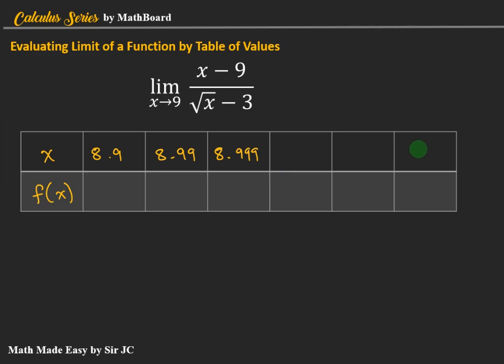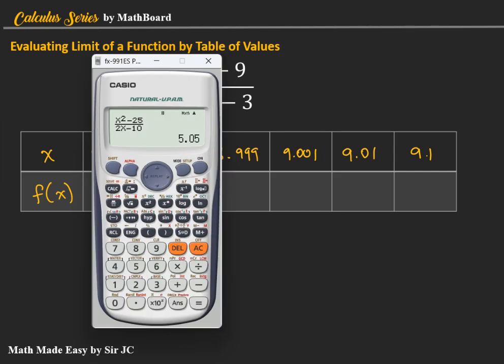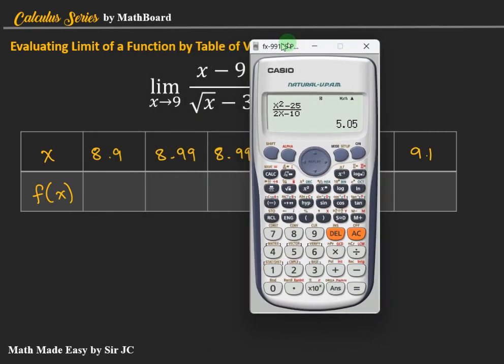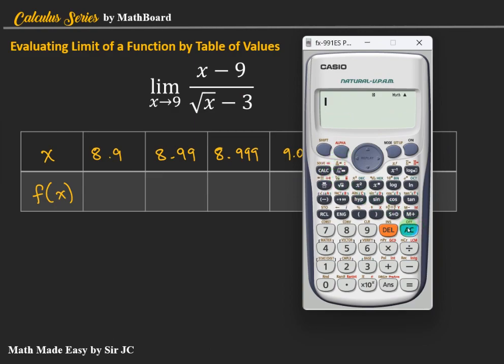Then from the right, that's 9.001, 9.01, and 9.1. So we just use the calculator and we enter first the function, x minus 9 divided by square root of x minus 3.